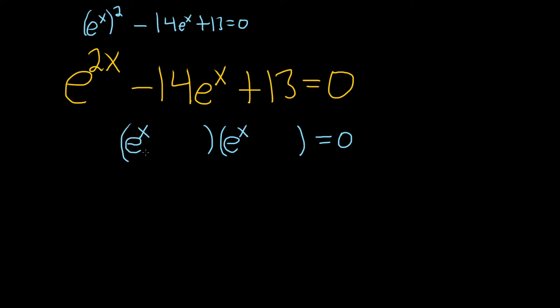And you can check this. When you multiply e to the x times e to the x, you end up adding the exponents. So you get e to the x plus x, which is e to the 2x. So it certainly checks.